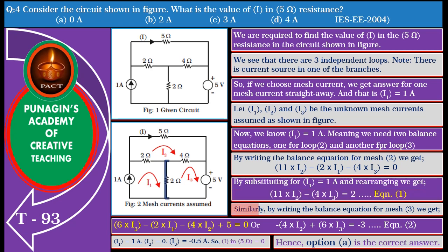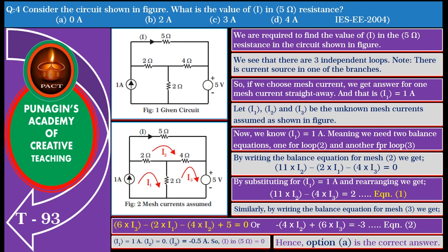Similarly, by writing the balance equation for mesh 3, we get 6 into I3 minus 2 into I1 minus 4 into I2 plus 5 equals 0. By substituting I1 equals 1 ampere and rearranging, we get minus 4 into I2 plus 6 into I3 equals minus 3.